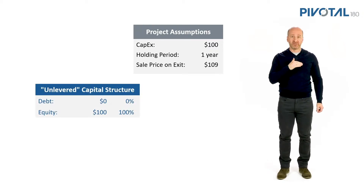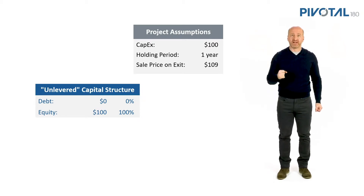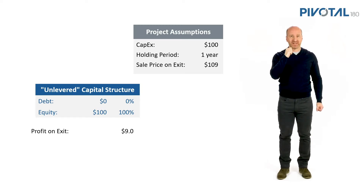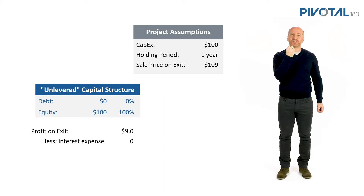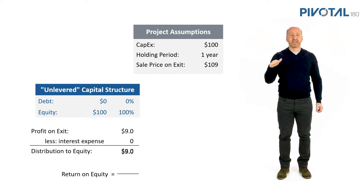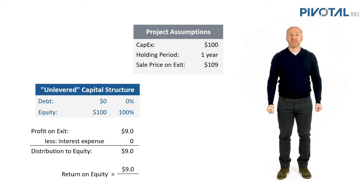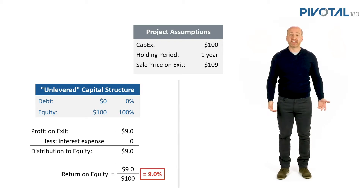It's been funded with zero debt and a hundred dollars in equity. On exit one year from now, when we sell that project, we receive a profit of nine dollars — a hundred and nine minus a hundred that was invested. We didn't borrow any money, so how would we calculate the return on equity? The nine dollar profit is the numerator, divided by the total amount of equity invested, a hundred. Nine divided by a hundred gives us a nine percent return on equity.